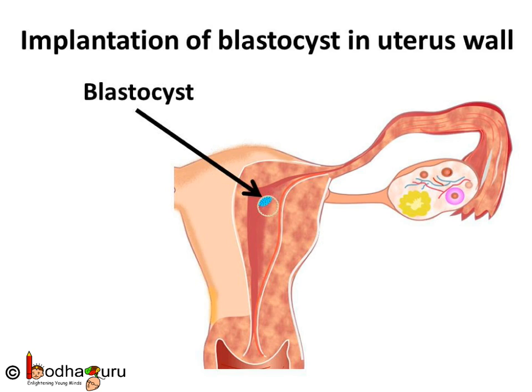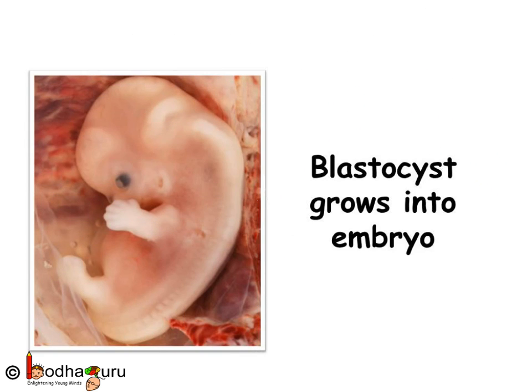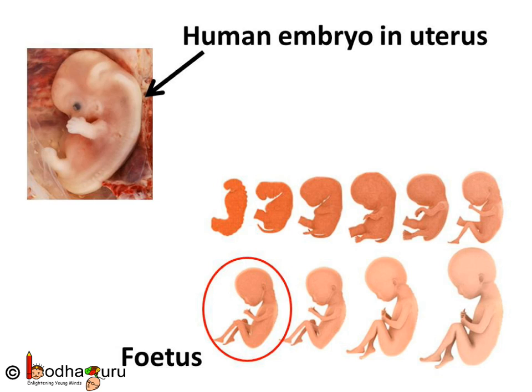Nutrients are required for the growth of an organism, and the embryo gets all the nutrients from the mother's body through its connection with the uterus. That mass of cells develops further — cells form different tissues, and different tissues together form primary organs. Thus a mass of cells turns into an embryo.